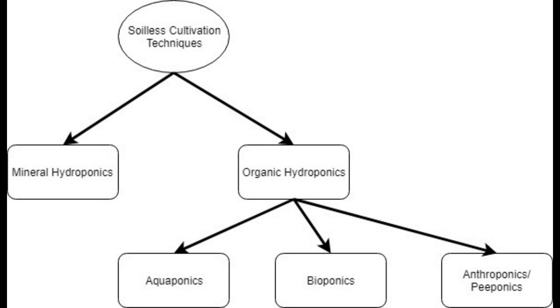Especially in the case of anthroponics, you really get the advantage of using the organic system. But on the other hand, you have other issues you have to deal with in order to maintain a very safe food production system.